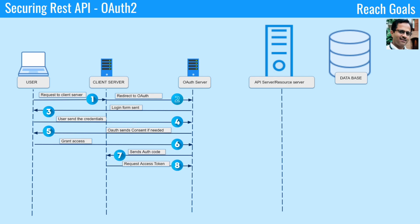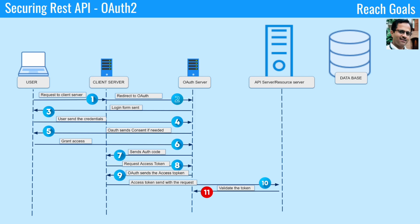If access is granted, the OAuth server sends the authorization code. The client application then requests an access token from the OAuth server, and the OAuth server sends the access token to the client server. The client application sends a request to the resource server, including the access token in the request header. The resource server sends a request to the OAuth server to validate the access token. Once validated, the resource server sends a response with the requested information to the client server, which forwards it to the user.